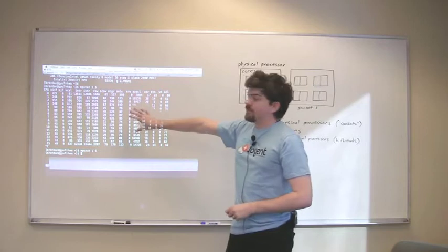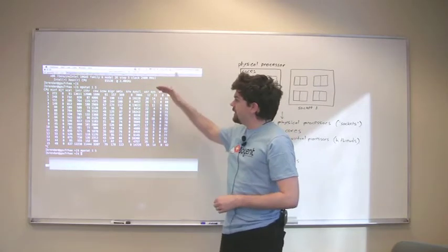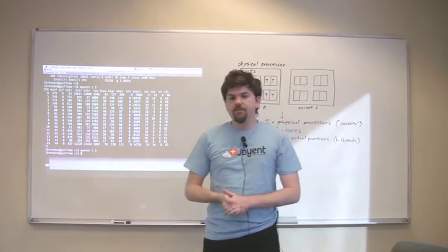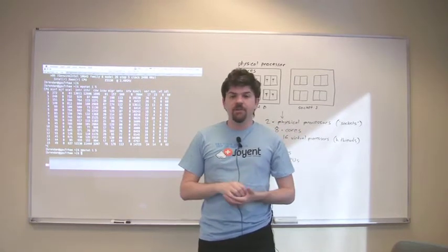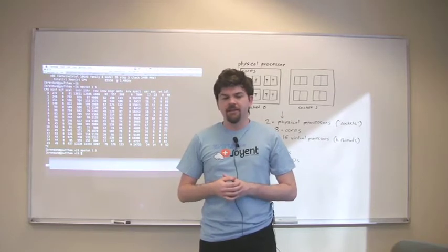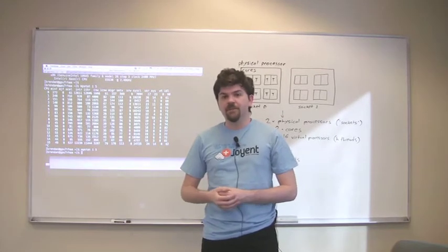MPStat looks like this, it's a command line tool, and it prints out information on each CPU in the system. It's used by system administrators to look at CPU usage and how well that's balanced, and it can also be used by anyone who's interested in the usage profile of CPUs on the system.